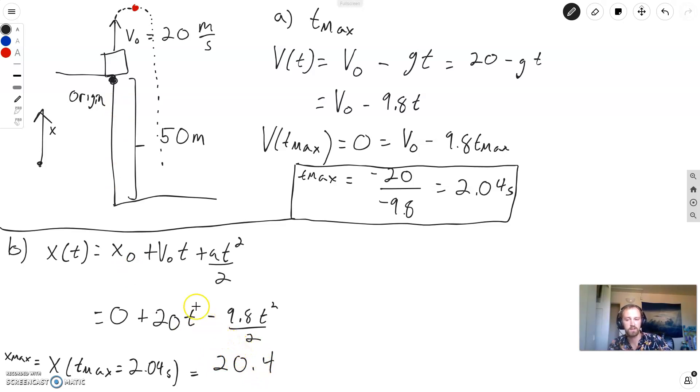Good test. You could put the origin at the ground instead and try and solve the problem that way. Then you'd have to take into account this difference of 50. But I'm not going to do that.